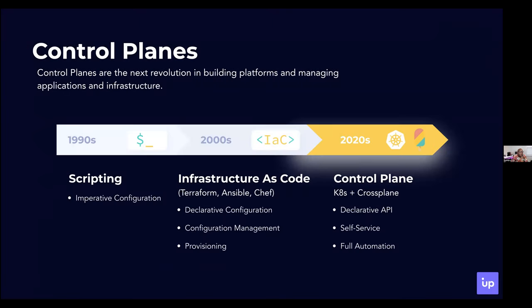We are in the control plane era — if you've been around the block, you've seen this coming for a while. Way back in the day, we were all doing scripting and configuration was imperative. We moved into the infrastructure as code era — I remember the first time I played around with Chef and Puppet; it was awesome, much better than what we were doing at the time. But now we are in the control plane era, popularized by public cloud providers and Kubernetes. We get advantages like declarative APIs, fully self-service automation, and a whole other slew of features behind the scenes.